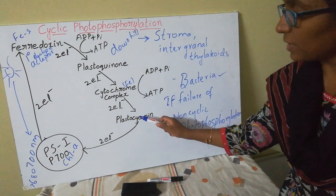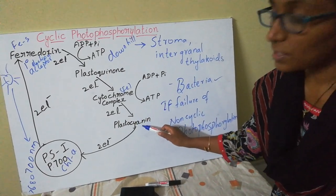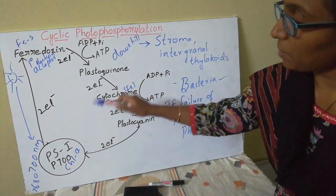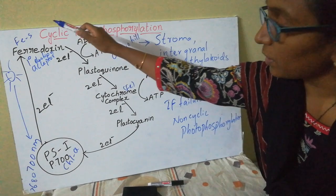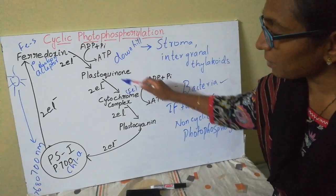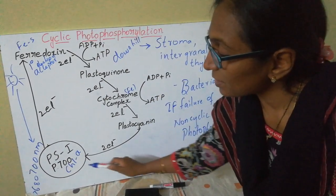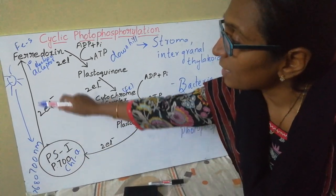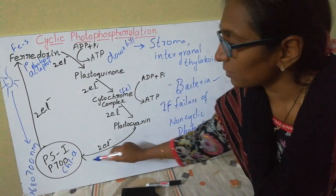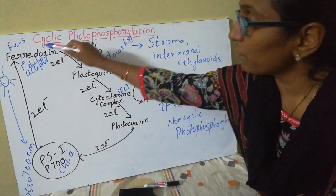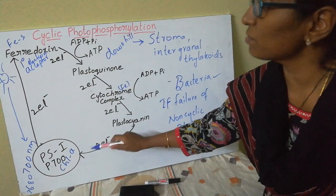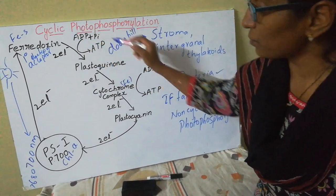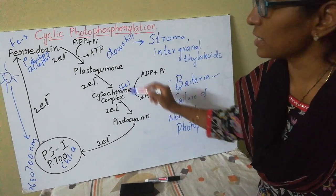From plastocyanin, the electrons are passed back to the same chlorophyll molecule. The electrons released from Photosystem 1 flow in a cyclic manner and are returned from plastocyanin to the same reaction center. Because the electrons flow in this cyclic manner, we call this process cyclic photophosphorylation.